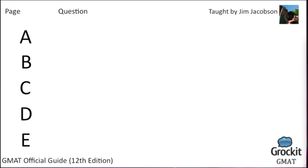On to number 69, still page 506: Scientists have modified feed corn genetically, increasing its resistance to insect pests. Farmers who tried the genetically modified corn last season applied less insecticide to their corn fields and still got yields comparable to those they would have gotten with ordinary corn. Ordinary corn seed costs less, however, and what these farmers saved on insecticide rarely exceeded their extra costs for seed.